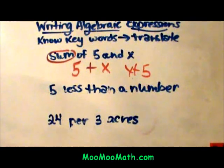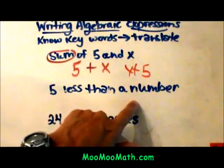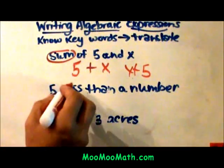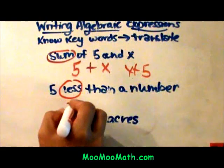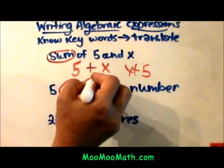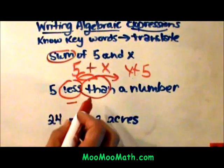Now that's not true with subtraction. So let's look at the second one. Five less than a number. Okay, less than—if I go to my keywords, less means I'm going to subtract. But you have to be careful. The than actually reverses in order how this is written.